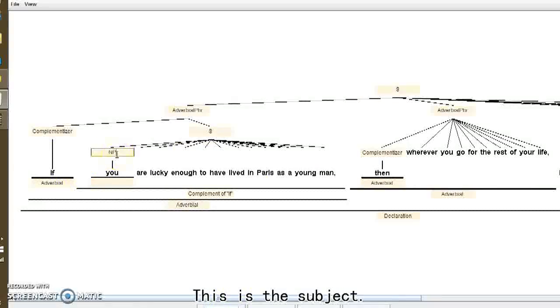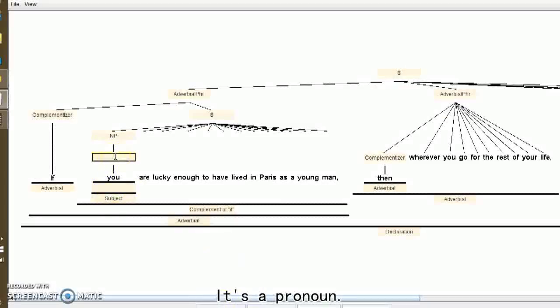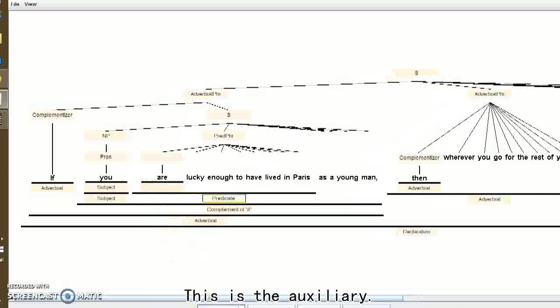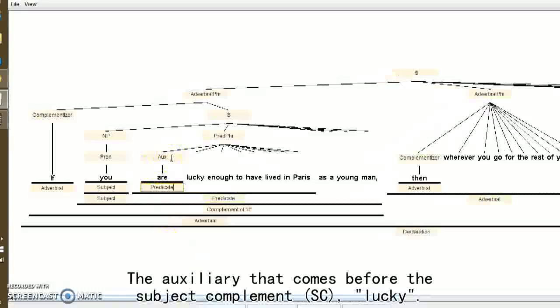So this is the subject. This is the predicate phrase. The auxiliary, the auxiliary that comes before the subject complement, lucky.